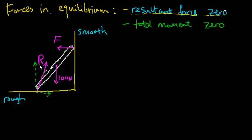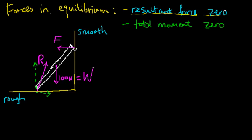So we know there are three forces: F, R, and the weight W. W is the 100 newtons. For F, we don't know the magnitude but we know the direction — it must be perpendicular to the wall, so at 90 degrees. For R, the force from the ground, we don't know its direction or its magnitude. This is a description of the problem.